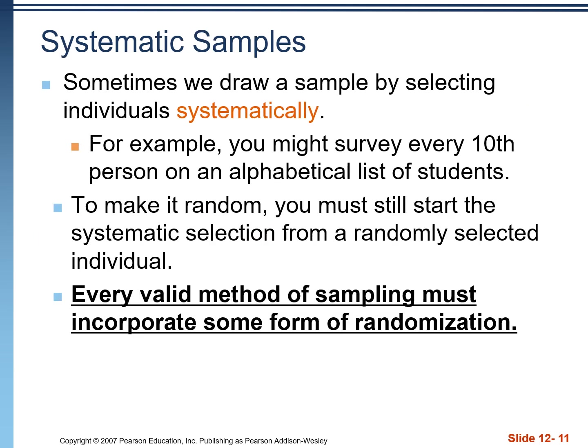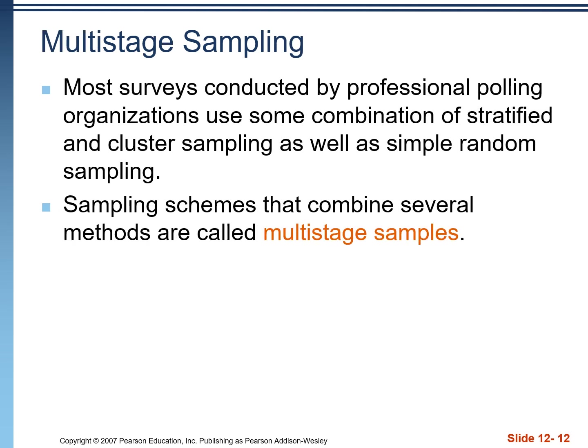In a systematic sample, we sample individuals systematically — for example, every 10th or every 15th subject. We always need randomization, so we randomly decide which person to start with and then pick every 10th person after that randomly selected starting point. Finally, multi-stage sampling is when we combine different sampling methods together.